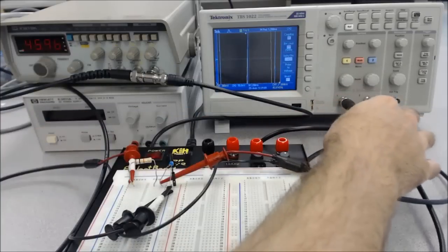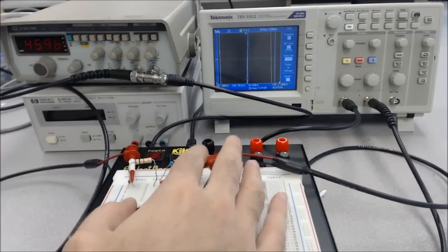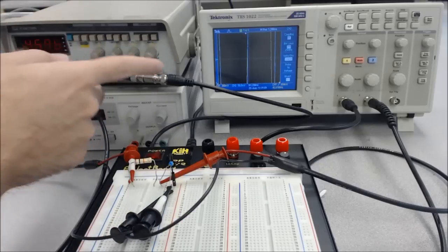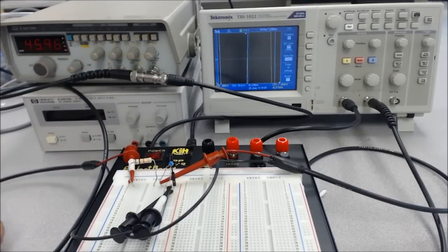I also connected channel two on the oscilloscope back through to the output of my filter, which you can see is these untaped off leads here. So now if you take a look over at the oscilloscope, that's what first showed up when I turned everything on, which isn't very helpful. So I'm going to push my favorite button, the autoset.